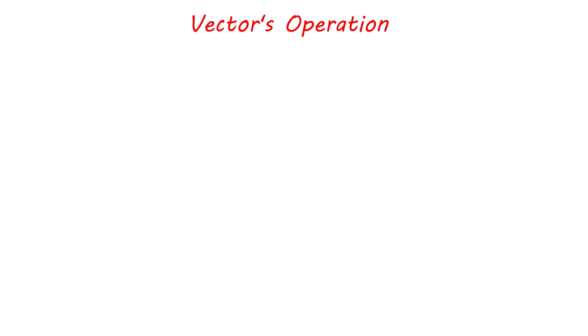In this final video on vectors, we will start by defining the sine, the cosine, and the tangent of an angle in a right triangle. We will use this knowledge when we study how to analyze a vector into its components and how to find the angle for the resultant vector.